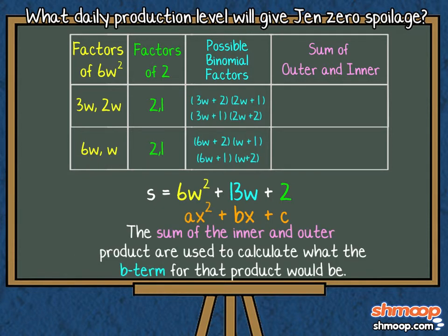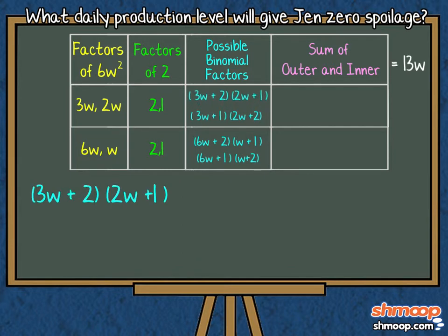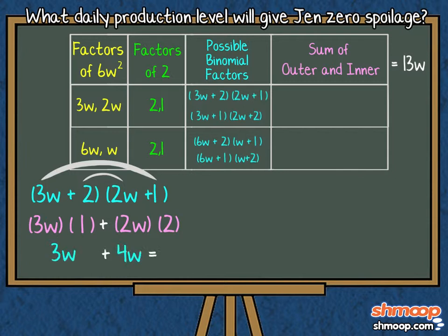Then the sum of the inner and outer products are used to calculate what the B term for that product would be. So for quantity 3W plus 2 times quantity 2W plus 1, we take the outer product first, which is 3W times 1, and add it to the inner products, 2W times 2. 3W times 1 is 3W, and 2W times 2 is 4W. So the sum is 7W. Not the right B term, so we keep trying.